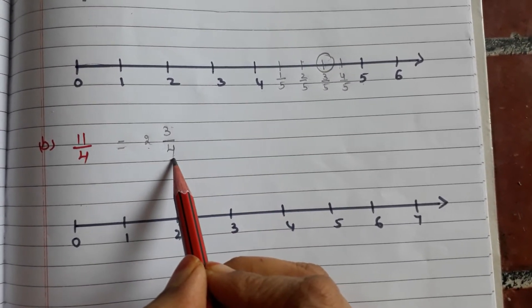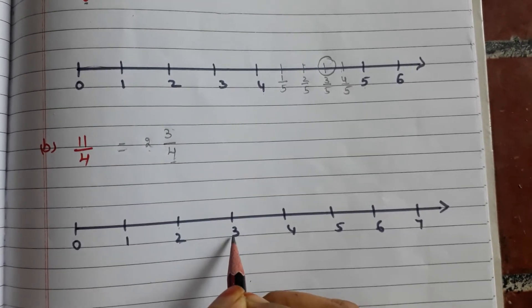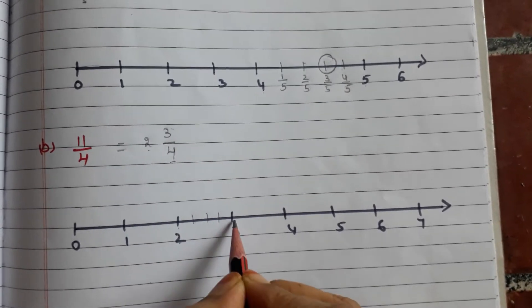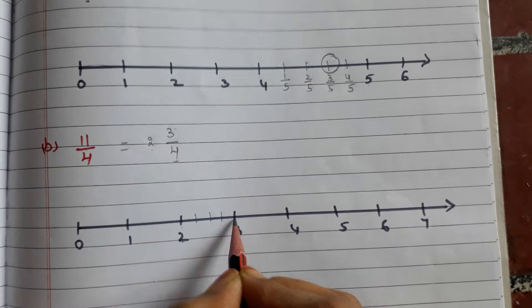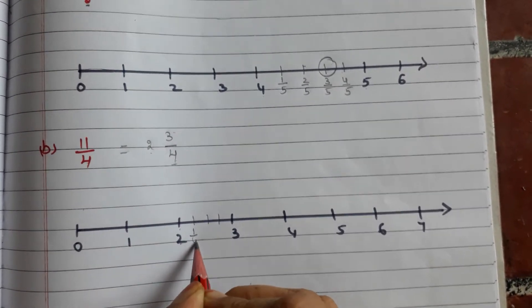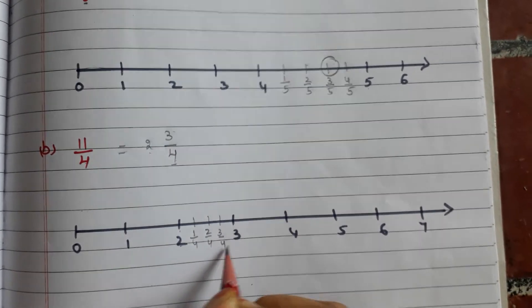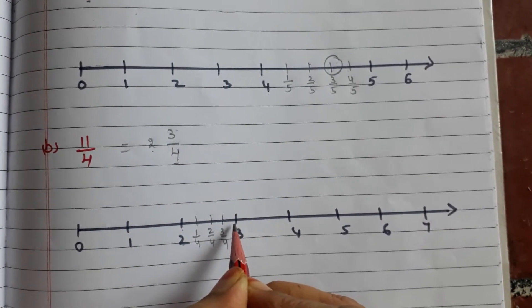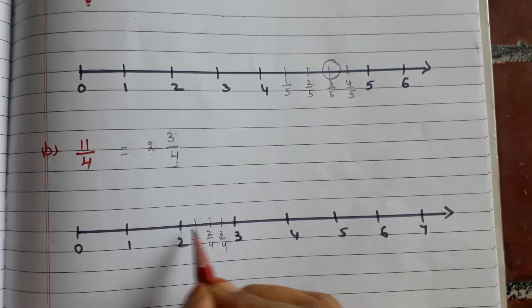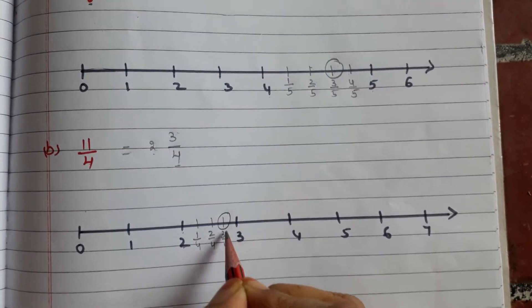Here the denominator is 4, so we have to make 4 equal parts between 2 and 3: 1, 2, 3, and this is the 4th part. This part will be 1/4, 2/4, 3/4, and this is whole — nothing but 4/4. Now 2 3/4 is here on the number line.